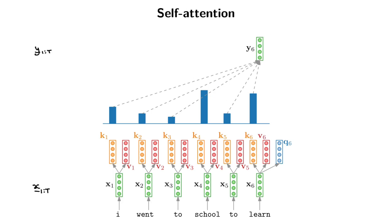We're going to do that for each of the positions. For the second position, we get a query, take the dot product of that query with each of the other keys — and also itself — get the A values, push that through a softmax, and get a different distribution for how we should weigh the value vectors. We weigh them to get the output at the second position. Let's step through that quite carefully and slowly go through all the steps.